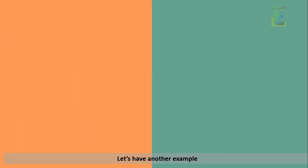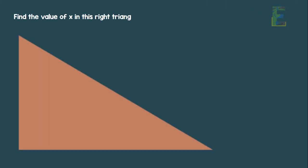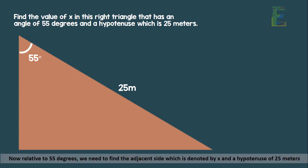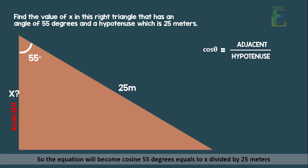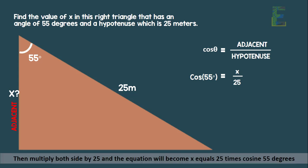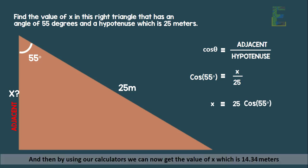Let's have another example: find the value of x in a right triangle with an angle of 55 degrees and a hypotenuse of 25 meters. Relative to 55 degrees, we need to find the adjacent side, which is x. Since cosine is associated with adjacent and hypotenuse, we use that formula. The equation becomes: cos 55° = x / 25. Multiplying both sides by 25, x = 25 × cos 55°. Using a calculator, x equals 14.34 meters.